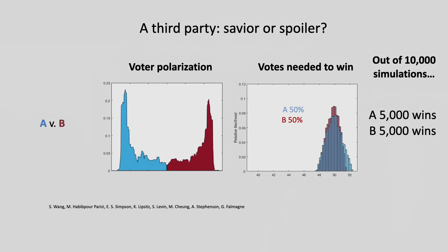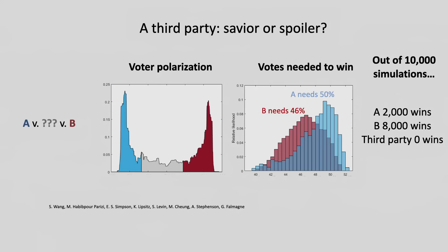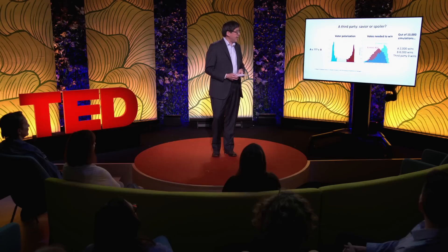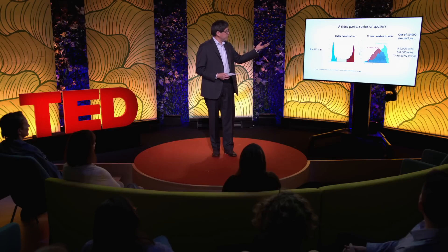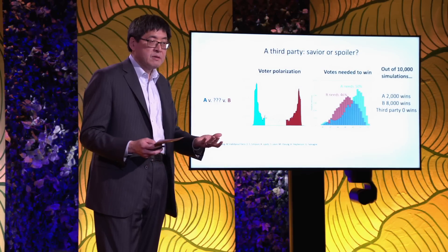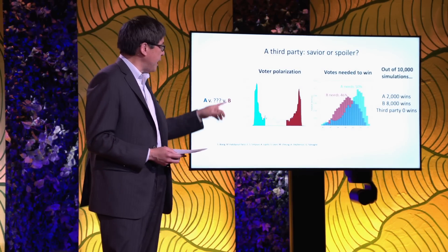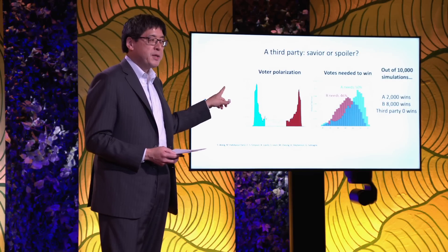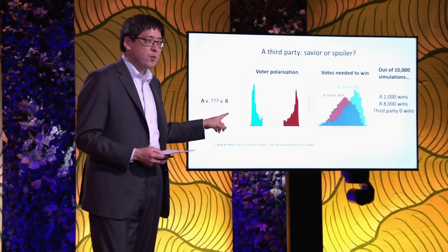Now imagine if we suddenly run a third-party candidate and put that candidate in the middle — a little bit closer to one of the peaks because they're more sympathetic to those views. Now that blue party still needs 50 percent of the vote to win. But because the third party has divided the vote, the reds only need 46 percent to win. Out of 10,000 simulations, the blues win only 2,000 times, the reds win 8,000 times, and the third party doesn't win at all. This is what we call a spoiler effect — paradoxically, the third party has spoiled the chances of the party closer to them, the opposite of what they were trying to accomplish.